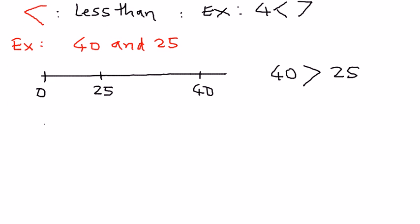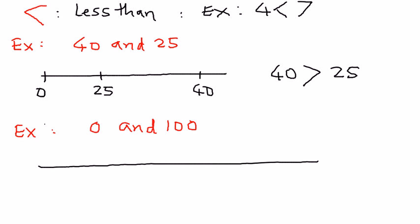Let's take another example using these inequality symbols. This time we want to place the correct symbol between 0 and 100. We draw the number line — we start with 0, and on the far end we say this is 100. 0 is less than 100, therefore the symbol we're going to put between these two numbers is less than.